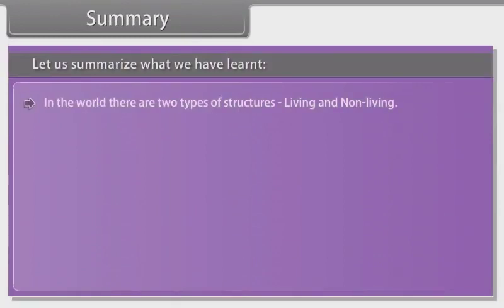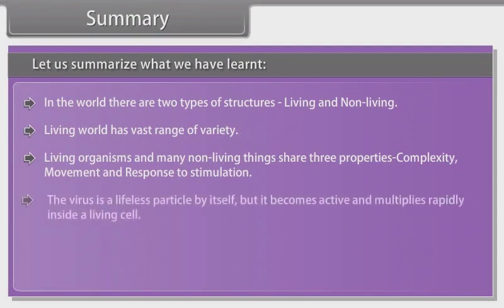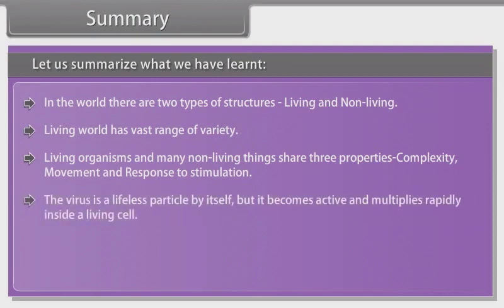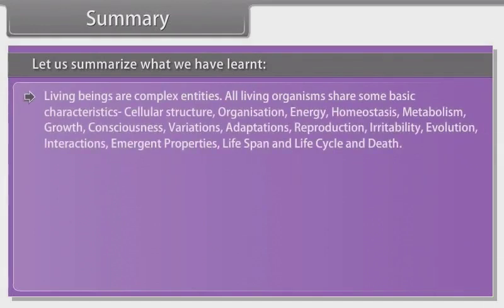In the world, there are two types of structures: living and non-living. The living world has a vast range of variety. Living organisms and many non-living things share three properties: complexity, movement, and response to stimulation. The virus is a lifeless particle by itself, but it becomes active and multiplies rapidly inside a living cell. The smallest unit of life is the cell, while the highest level of biological organization is the biosphere.